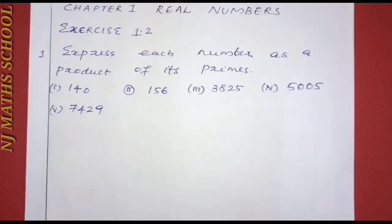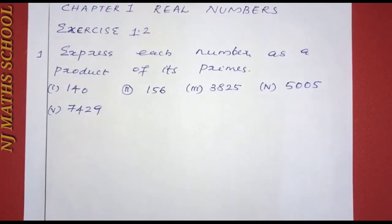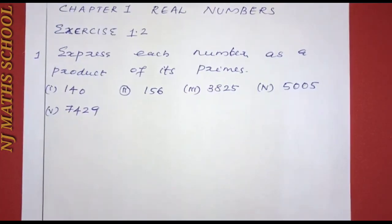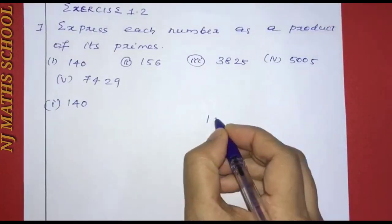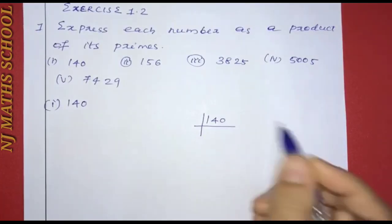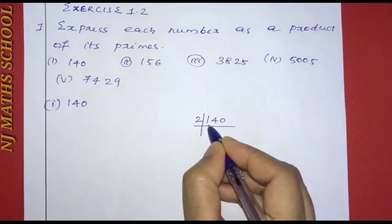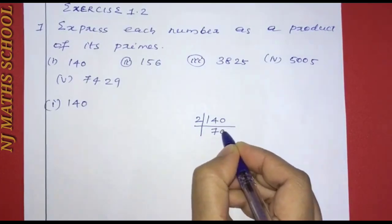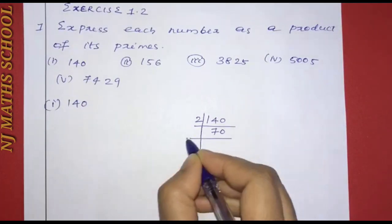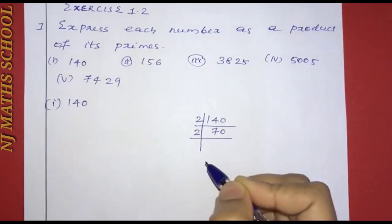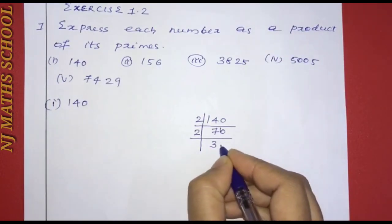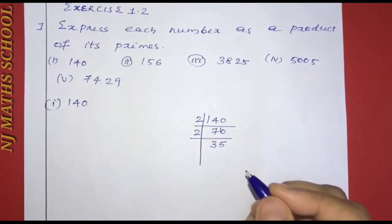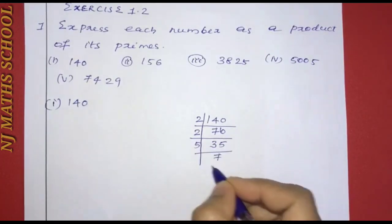The first question in chapter 1 is to express each number as a product of its primes. The first number is 35. We need to factor 35. 7 times 5 — 5 sevens are 35. So 35 is equal to 5 into 7.